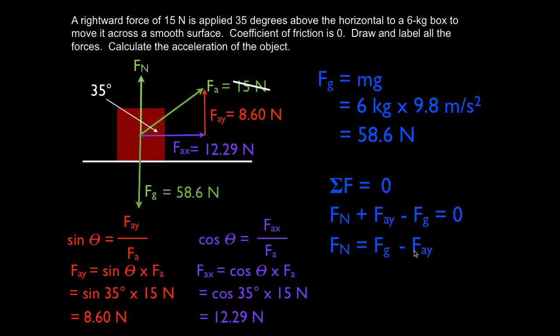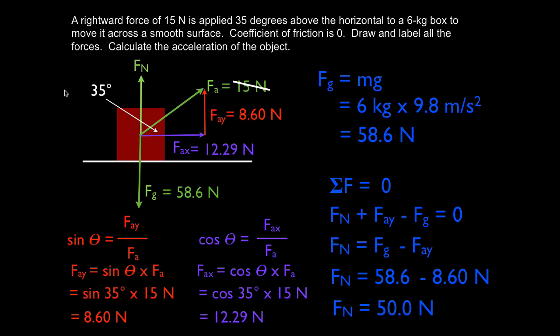This makes sense: the normal force equals the weight minus the amount we're pulling up. The surface doesn't need to apply 58.6 Newtons — it applies 58.6 minus the y component we're pulling up. The y component of the applied force is actually lifting the box slightly, making the normal force less. So FN equals 58.6 minus 8.6, giving a normal force of 50.0 Newtons.